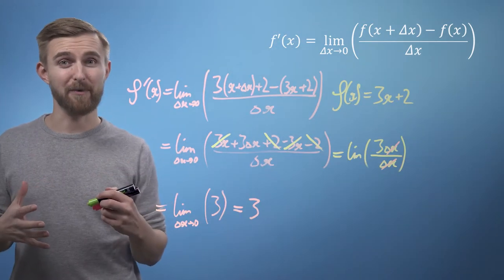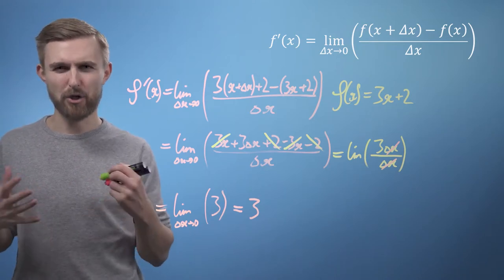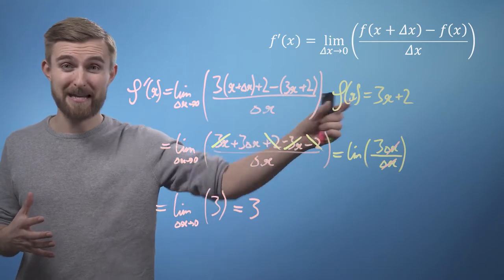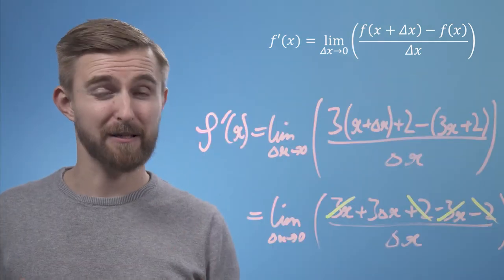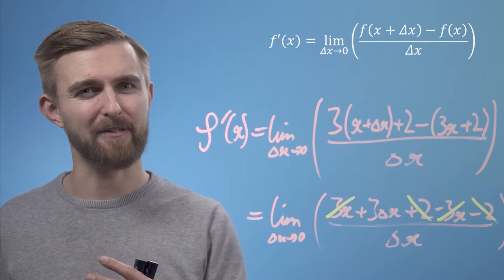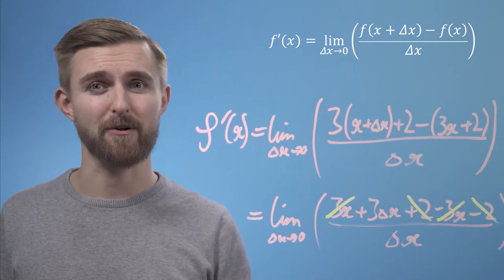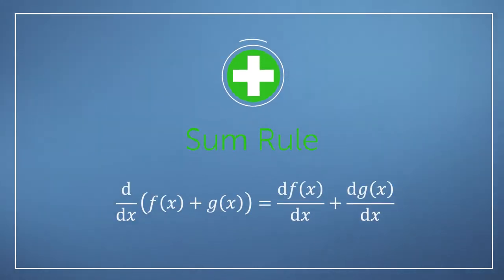Something else to take away from this simple example is that we actually differentiated two things at once, a 3x bit and a plus 2 bit. We could have differentiated them separately and then added them together and still got the same result. This interchangeability of the approach is called the sum rule, and it's pretty handy.